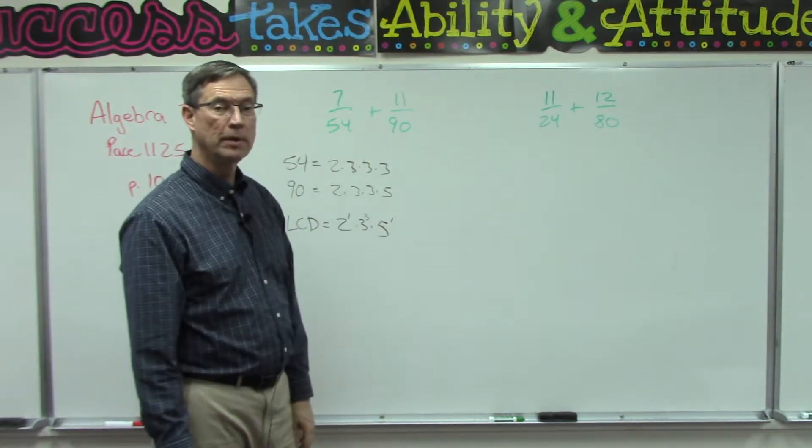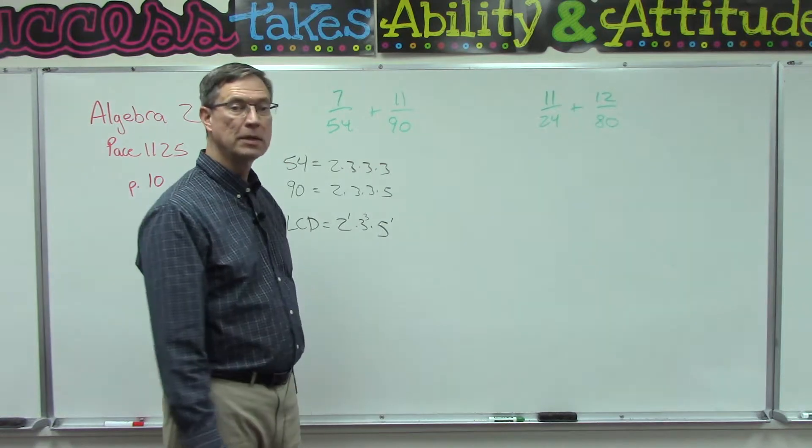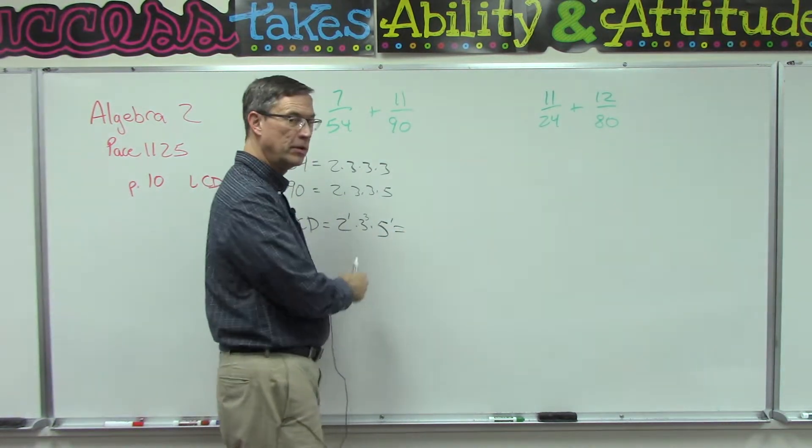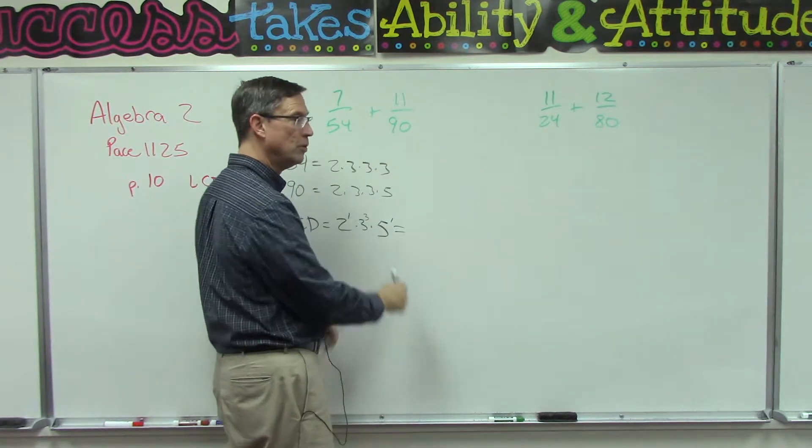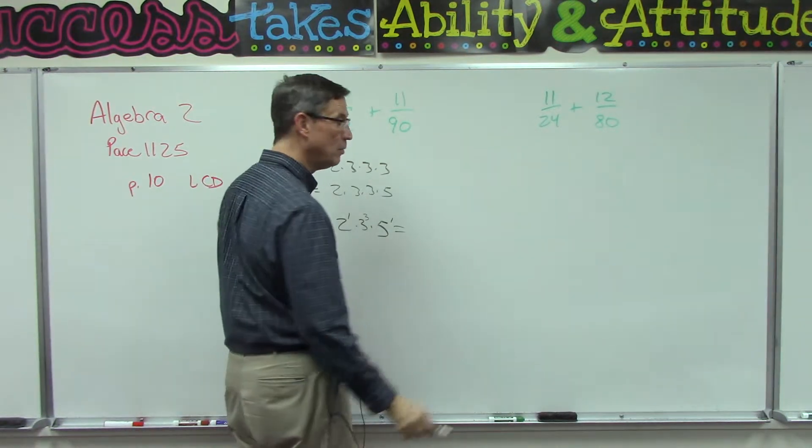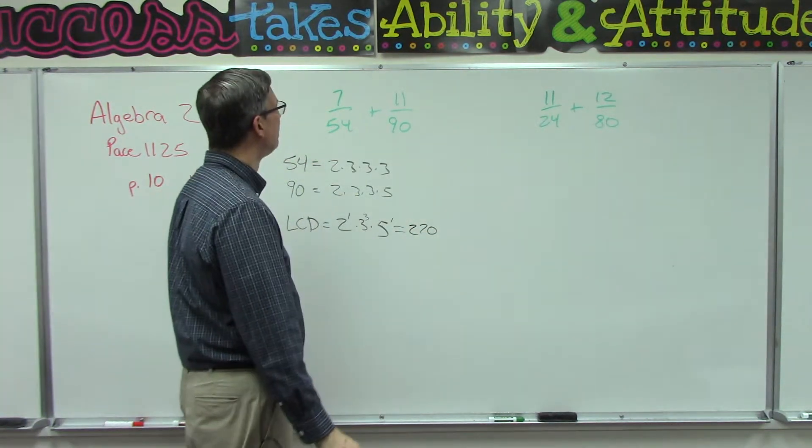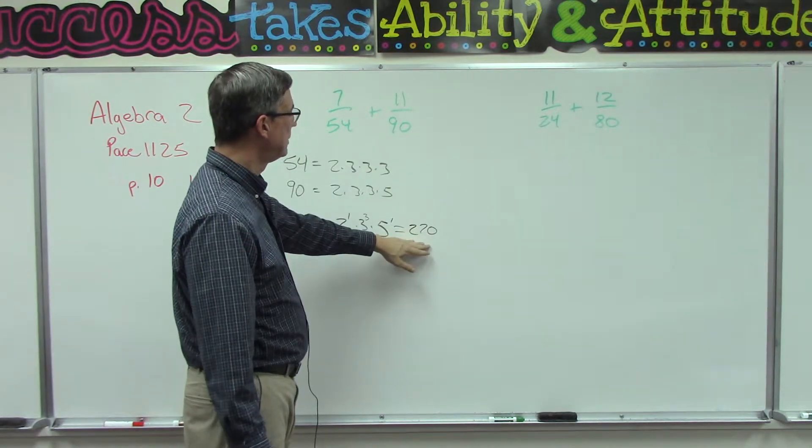5 does not show up here at all, but it does show up here and it's one time, so I need to use one in my answer there. Now if I multiplied all these together, what would I get? I'm doing it in my head, but I know that 3 to the third is 27, 2 times 5 is 10, so I'm doing 27 times 10 in my head: 270.